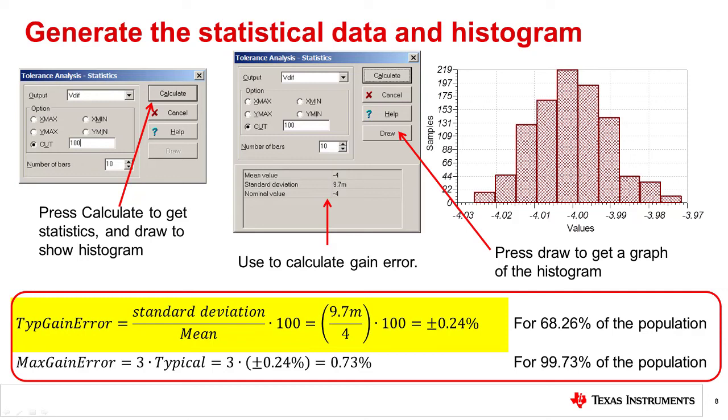For a typical gain error corresponding to one standard deviation, take the standard deviation and divide by the mean value and multiply by 100 to get percentage.